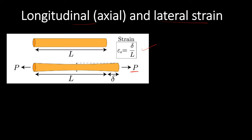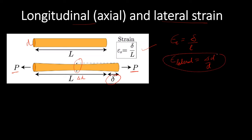Consider a bar acted upon by force P. Along the axis there is a change in length Delta, so the longitudinal strain is given by Delta by L. Since the volume remains constant, the diameter also changes. If the initial diameter is D and the change in diameter is Delta D, then the lateral strain — in the direction perpendicular to the axis — is given by Delta D by D.